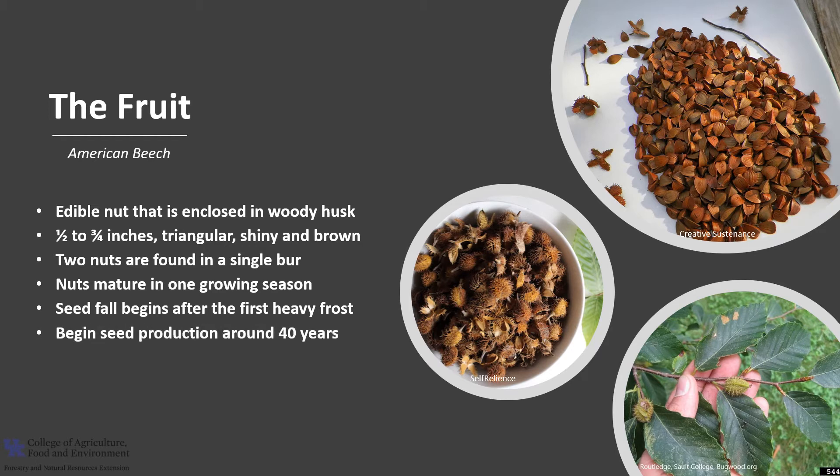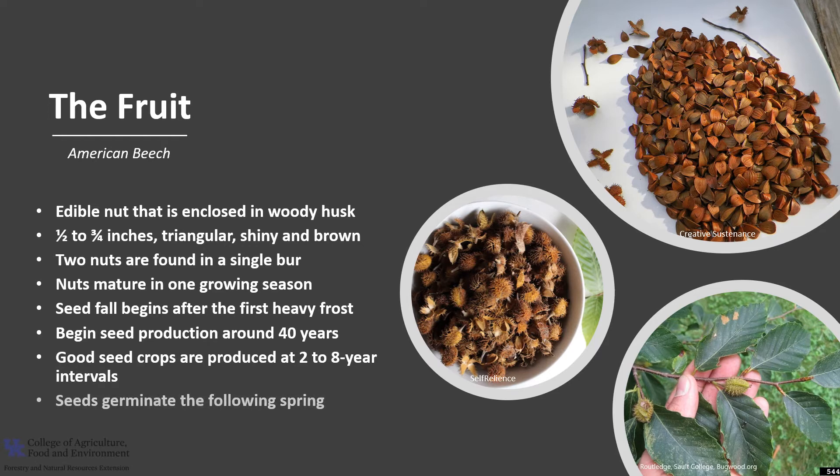Trees begin seed production around 40 years of age, with best production after 60 years. Good seed crops are produced at 2 to 8 year intervals, and seeds germinate the following spring.